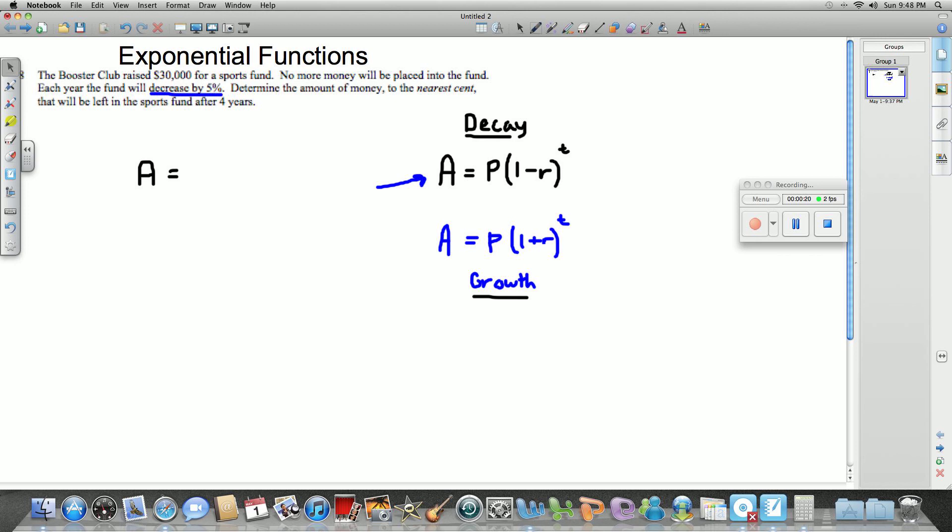So for this one, starting off with our P, our principal, is our amount we're starting with. So that's 30,000. So we're going to start putting that in.